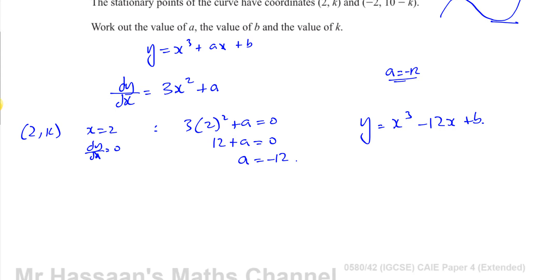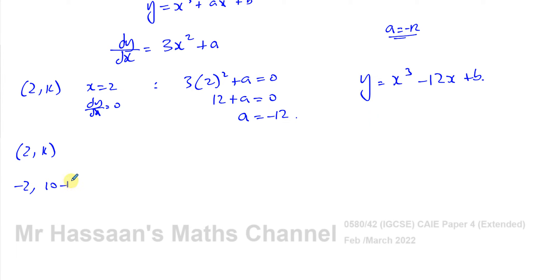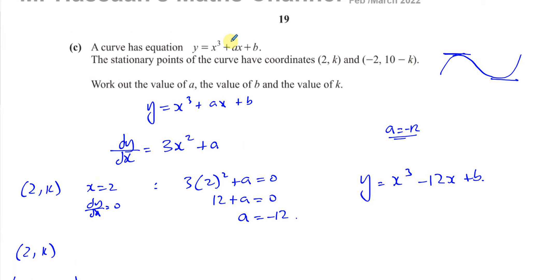Now I need to find b and k. I can use the fact that both (2, k) and (-2, 10 minus k) are stationary points on the curve, which means they lie on the curve. Therefore the x and y values of these two coordinates satisfy the equation. If I put x as 2, y comes out as k, and if I put x as minus 2, y comes out as 10 minus k.